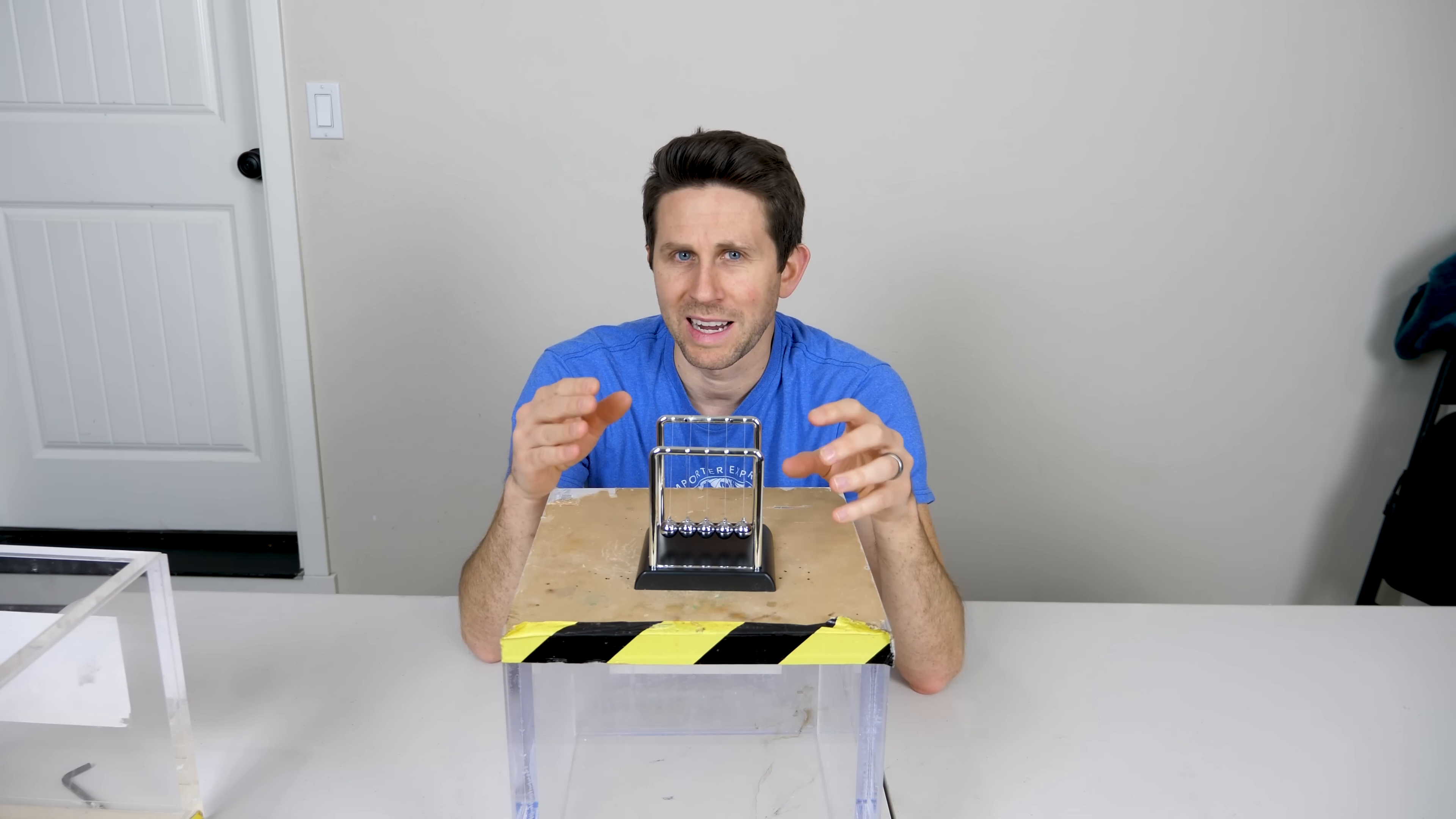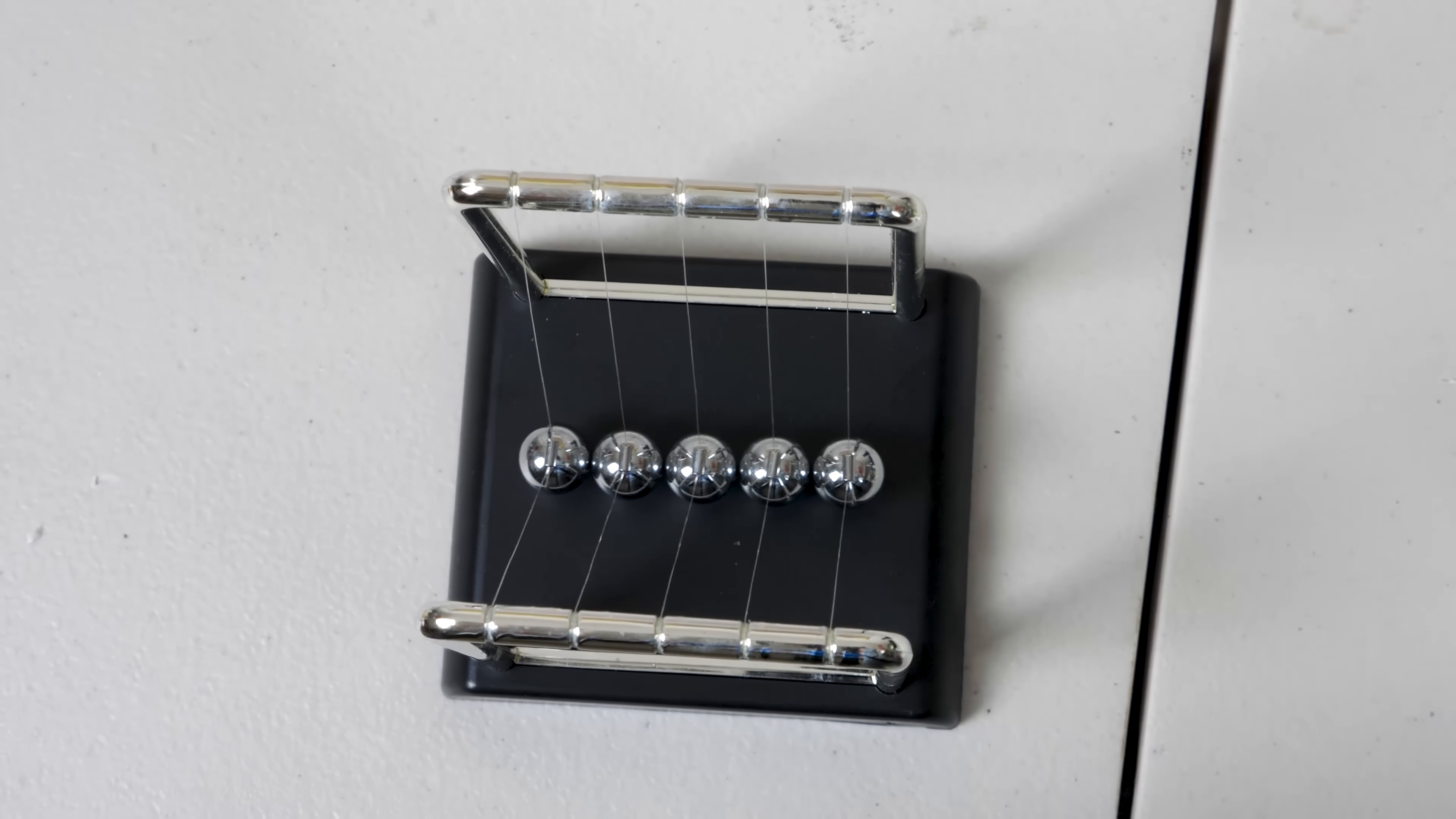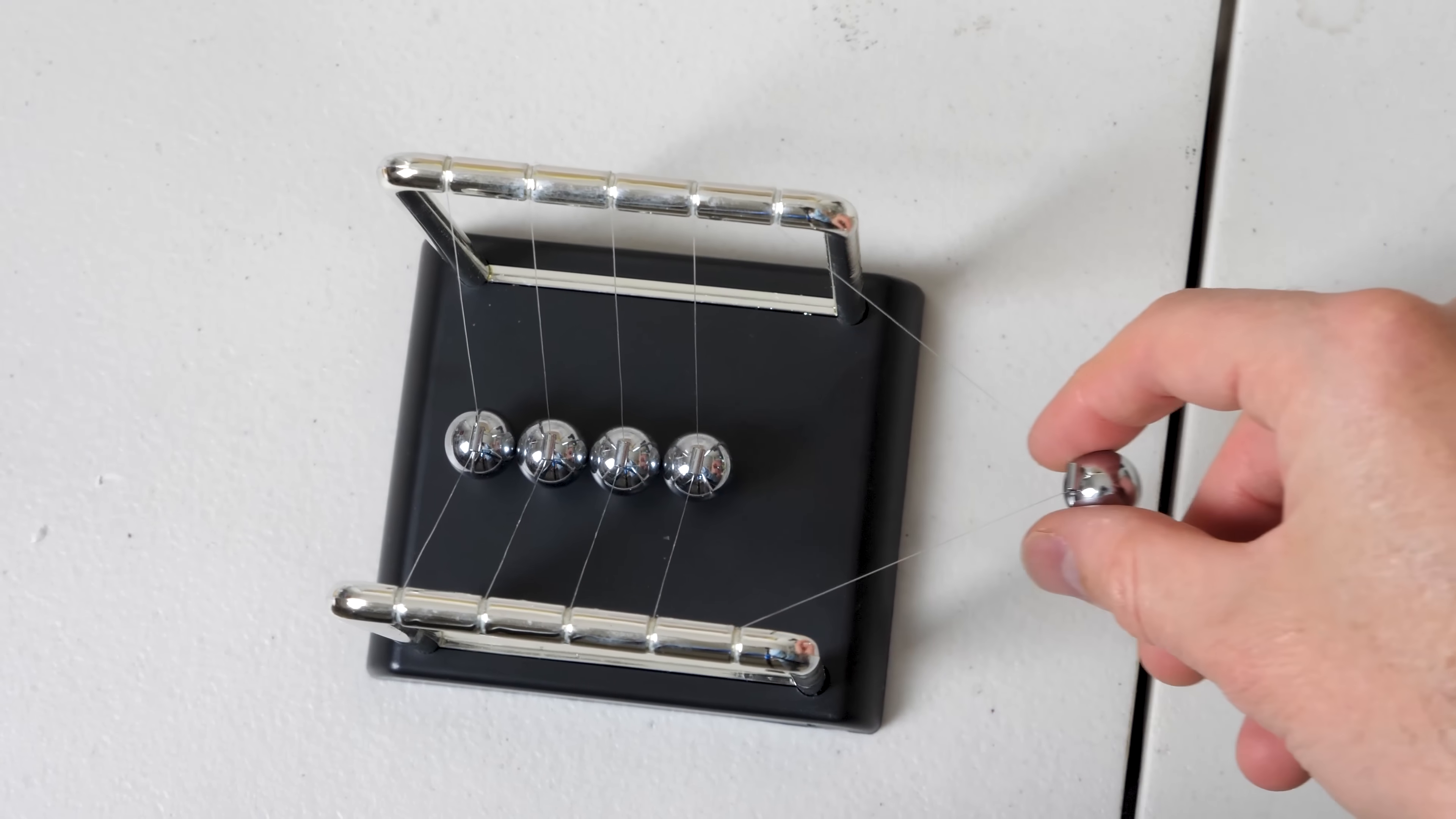It cannot be explained how it works simply by using the law of conservation of momentum. Let me show you what I mean. A typical Newton's Cradle looks like this. It has five balls that are suspended on both sides by some strings, and they're suspended so that they're hanging directly in the middle of those strings.